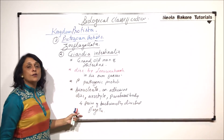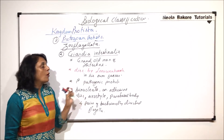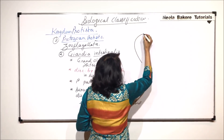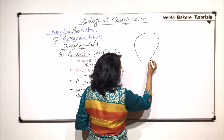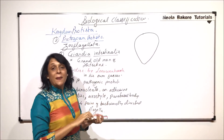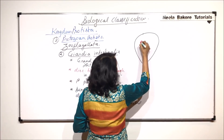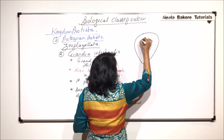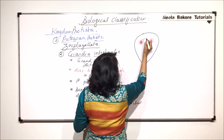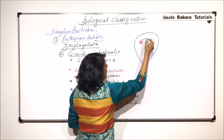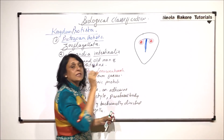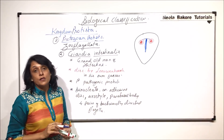Let us first draw this structure and then we will try to understand all these parts. The shape is slightly conical from the lower side and broad from the upper side. It is bi-nucleate — there are two nuclei, and the nuclei are connected by a rhizoblast.